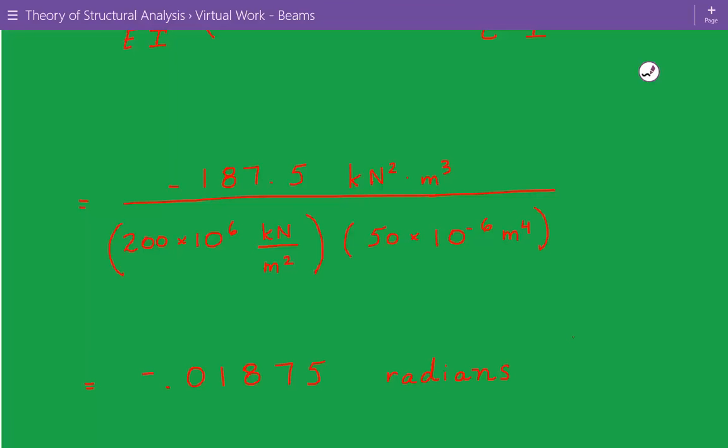So if the algebraic sum of the integrals was positive, that would tell us that the slope or displacement was in the same direction as a virtual unit load or couple. But since this is in the negative direction, this is telling us that the slope, the virtual unit couple that we've applied, the actual slope is opposite to this direction.